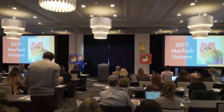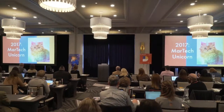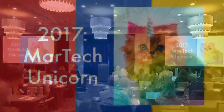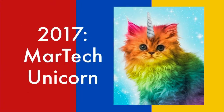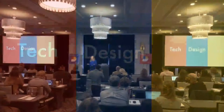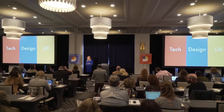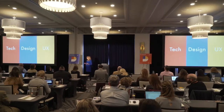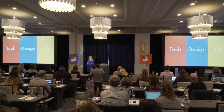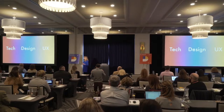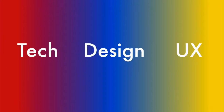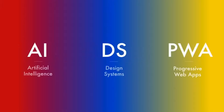To participate in marketing technology today you almost need to be a little bit of a unicorn — or in my case, a catacorn. To be a marketing technologist today, or to be in any type of related field, you really need to be equally adept at technology, design, and UX. And almost more importantly, you need to understand those blurred spaces in between. Today I'm going to look at artificial intelligence, design systems, and something really cool called progressive web apps.